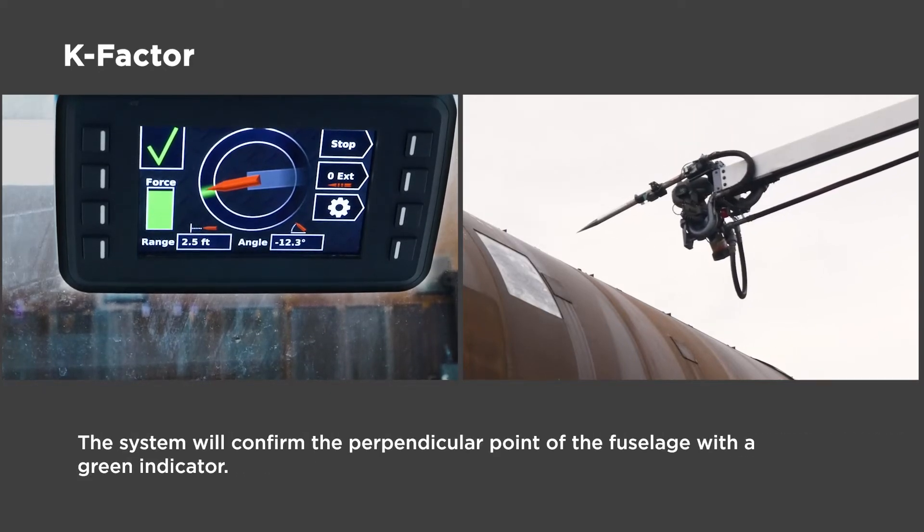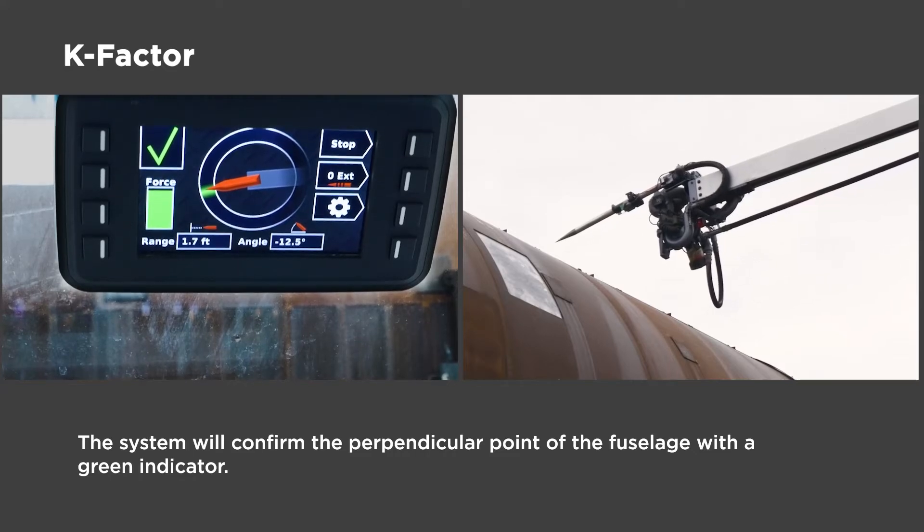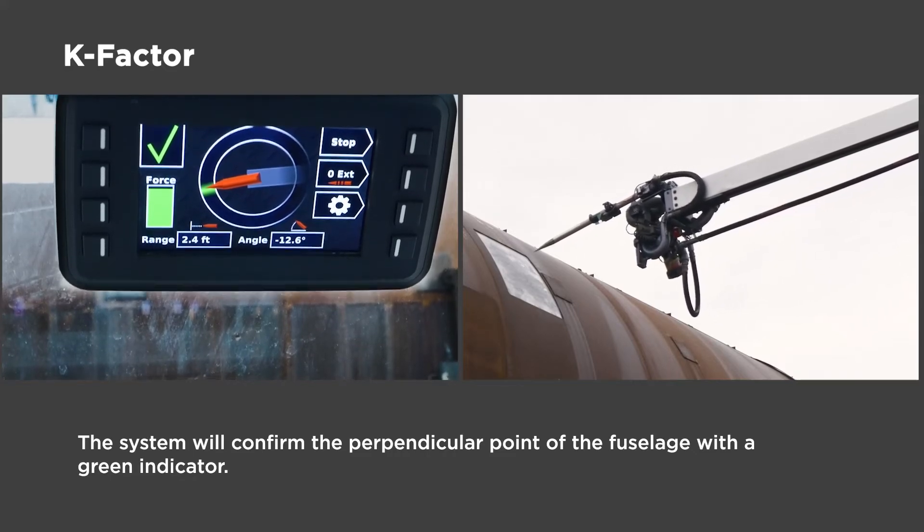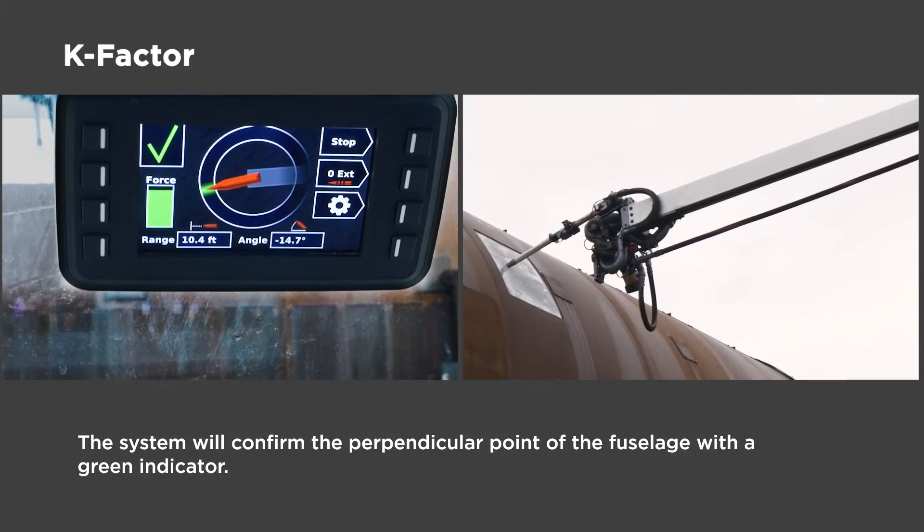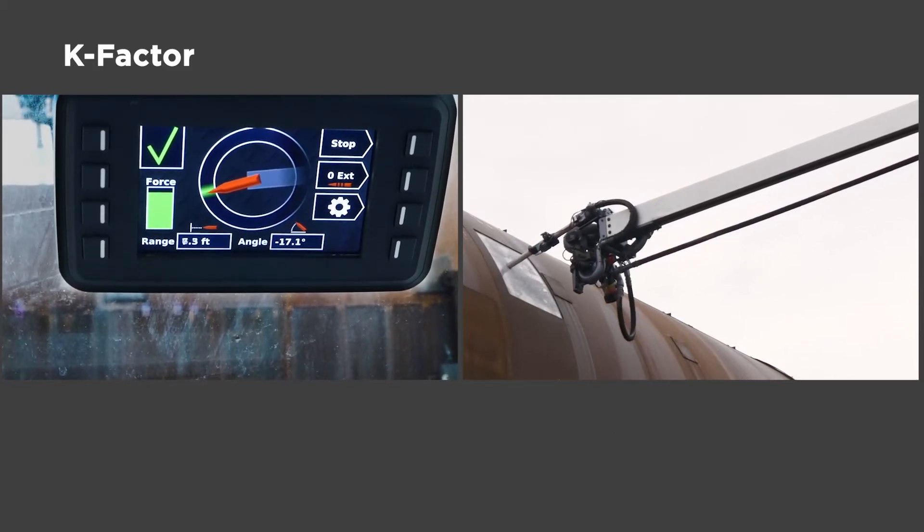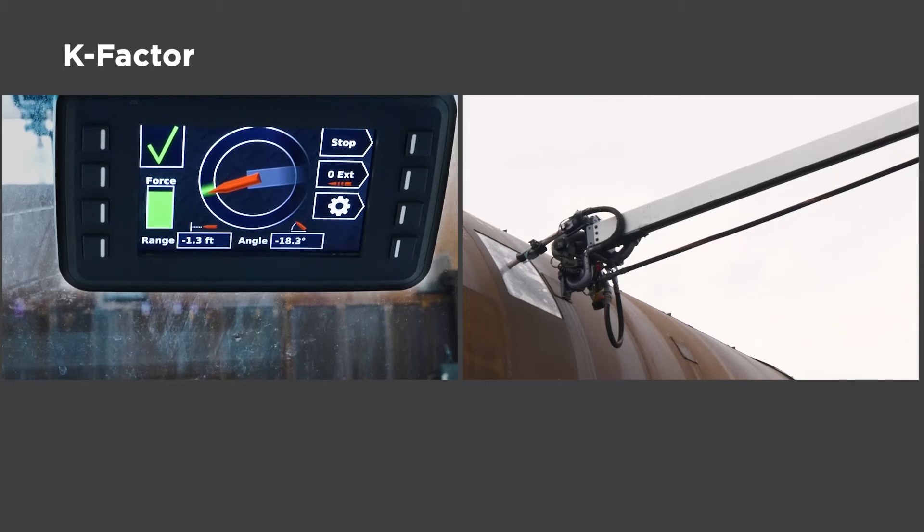The system will then indicate the perpendicular point on the fuselage with a green light. With this guidance, the operator will know how far away from the plane the tip is and where to place the tip on the fuselage, allowing them to be more proficient in the piercing operation.